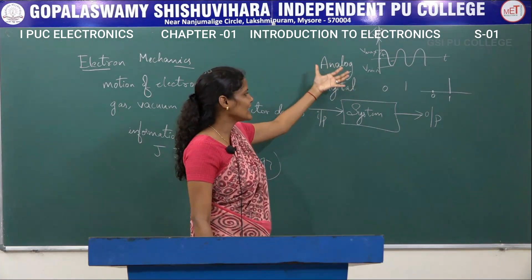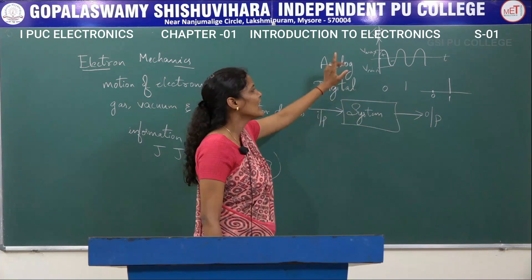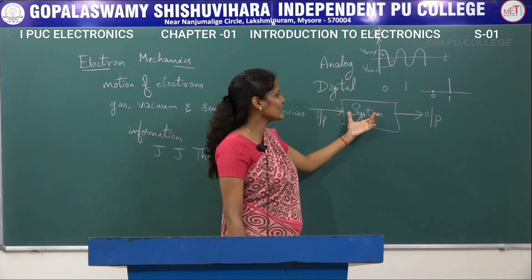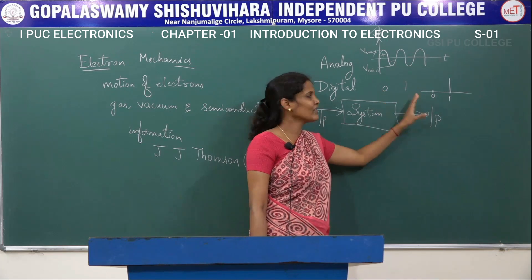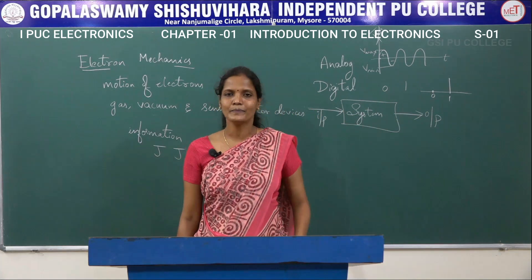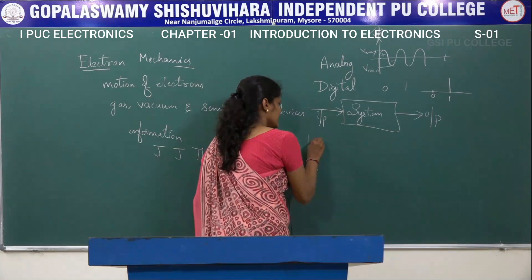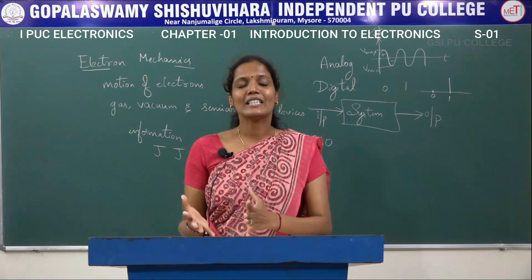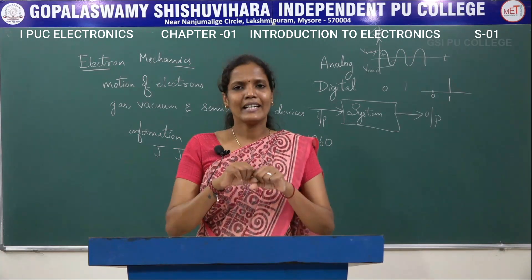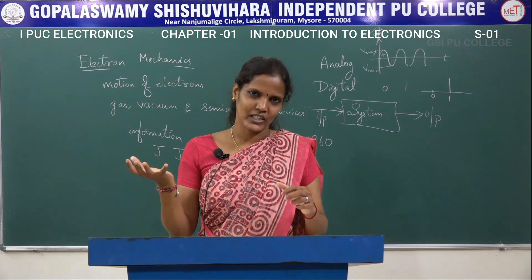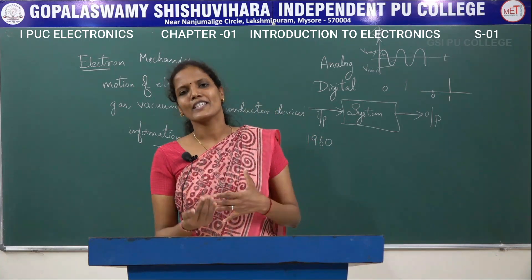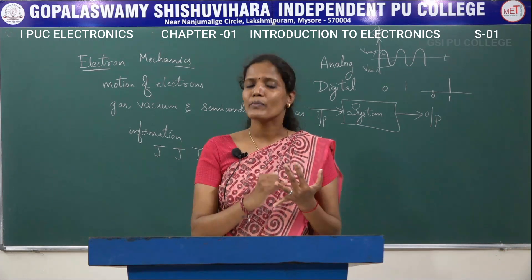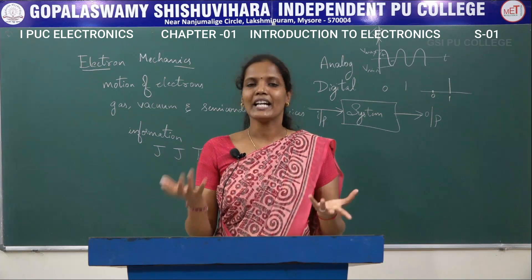Analog electronics deals with the system in which a continuously varying signal is applied. Digital electronics is a system in which only two different levels of signal are given — zero and one. Until 1960, electronics was considered a part of electrical engineering. But with the advancement of electronic devices, electronics emerged as a separate engineering branch. With further advancement, sub-branches developed: computer science, information technology, communication engineering, and so on.